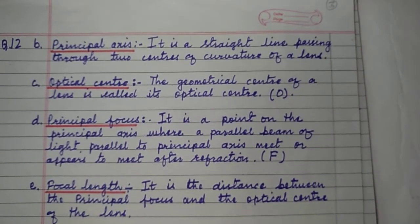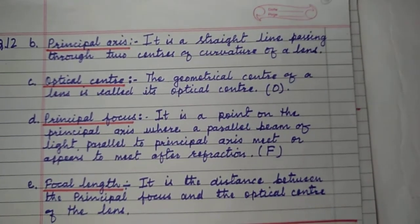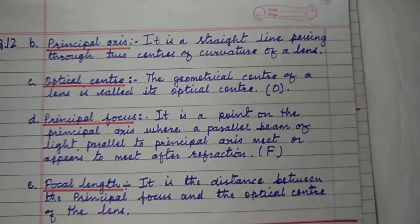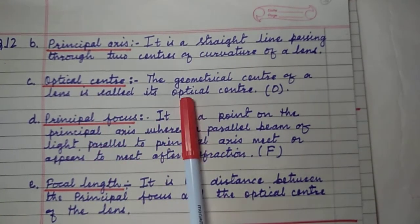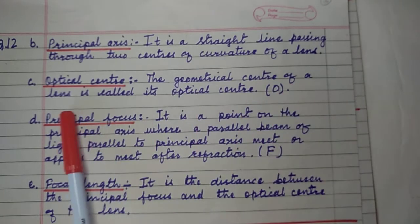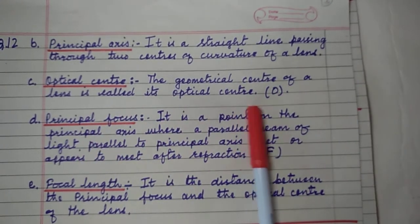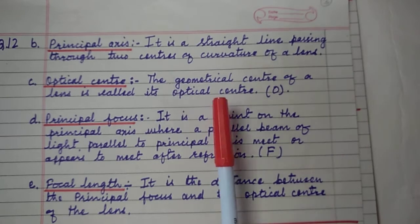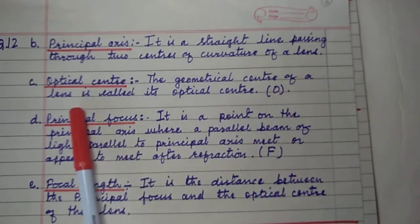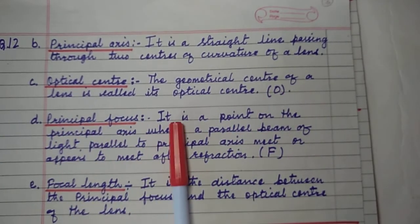Principal axis: it is a straight line passing through two centers of curvature of a lens. Optical center: the geometrical center of a lens is called its optical center, denoted by O — it is the center part of the lens.